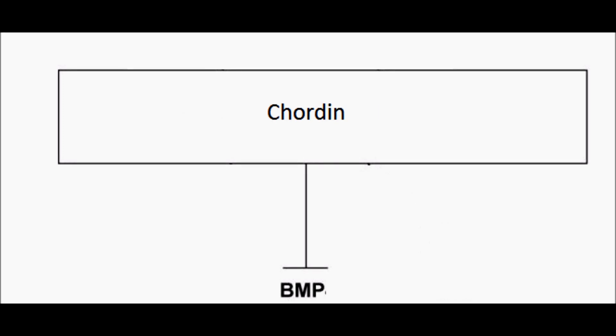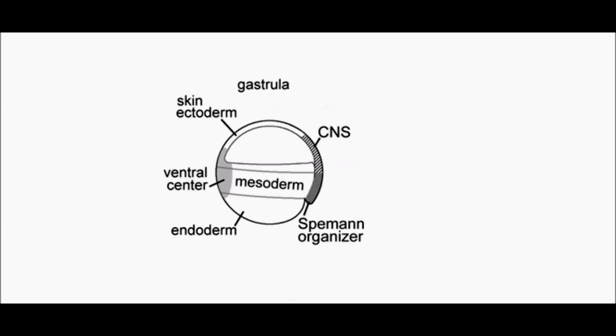The trunk-tail organizer blocks BMPs by using proteins like Noggin and Chordin. This results in the notochord. The signaling from the organizer sets up the ventral-dorsal axis and body patterning.